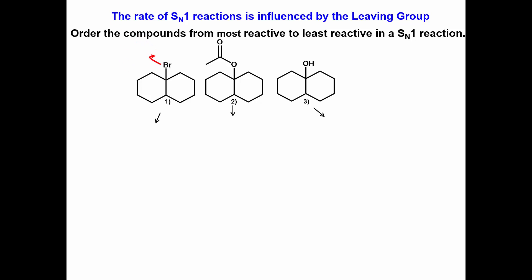For compound 1, the bromide ion is the leaving group. For compound 2, the acetate ion is the leaving group. And for compound 3, the hydroxide ion is the leaving group.